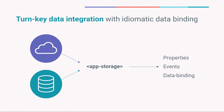App storage is essentially an interface that allows you, the developer, to create your own web component to connect data from any service — whether in the cloud or on the device — and surface that data in a way your app can use. The way app storage surfaces the data is very platform idiomatic: data is surfaced as a property on the DOM node, and any changes to that data are expressed as DOM events. And conveniently, that's exactly how Polymer's own data binding system works. So app storage provides turnkey integration with Polymer's own data binding system.